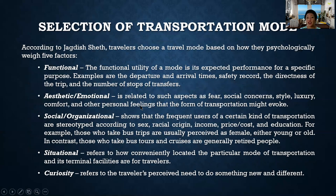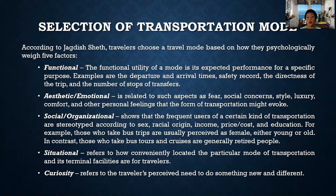According to Jagdish Sheth, travelers choose a travel mode based on how they psychologically weigh five factors. First is functional — the functional utility of a mode is its expected performance for a specific purpose. Examples are the departure and arrival times, safety record, the directness of the trip, and the number of stops and transfers. When we select transportation, we are very particular with departure and arrival times, safety record, and number of stops.